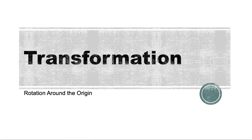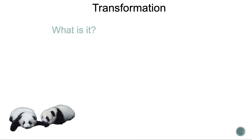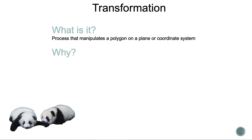Transformation: rotation around the origin. What is it? A process that manipulates a polygon on a plane or coordinate system. Why? It helps to create mosaics.